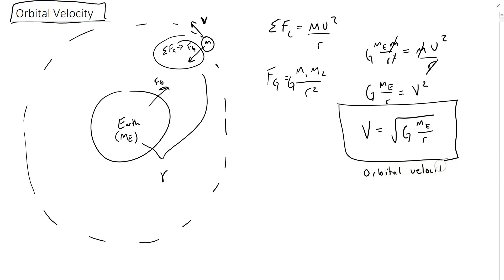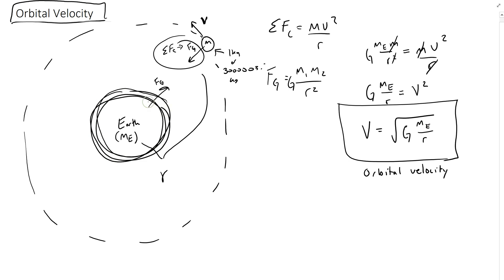Notice that the orbital velocity does not depend on the mass of the thing that's orbiting. It doesn't matter if the Moon is one kilogram or 300 million kilograms — it doesn't matter. It only depends on the mass of the thing being orbited, in this case the Earth, and the distance from the center, or the orbital distance.